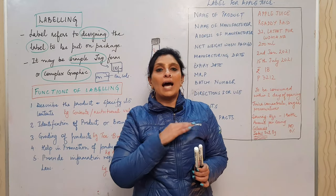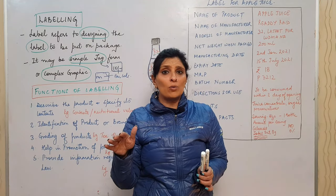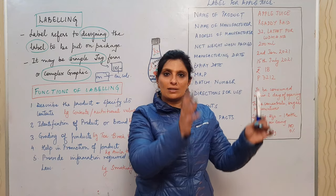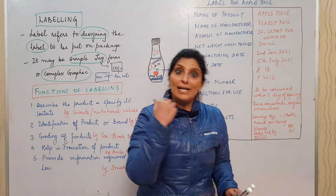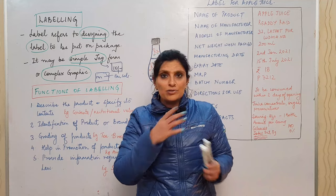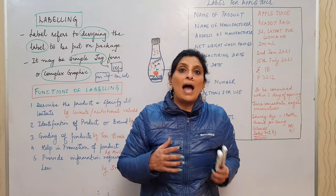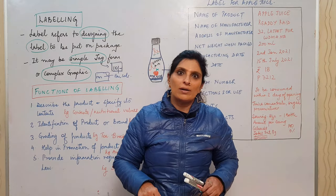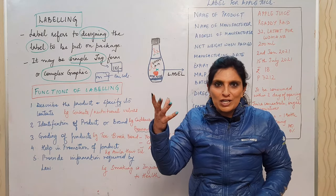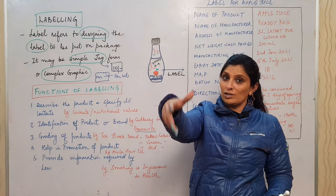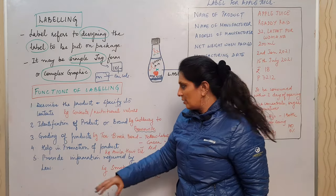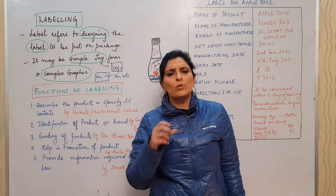Functions of labeling: first, to describe the product and specify its contents — all the information listed on the label describes the product fully. Second, identification of product or brand — for example, seeing a brown chocolate wrapper instantly identifies it as a specific brand. The moment I see the shelf with Bourneville, I tend to buy it. A purple wrapper immediately signals Dairy Milk. Labeling makes it easy for consumers to identify products on a shelf.